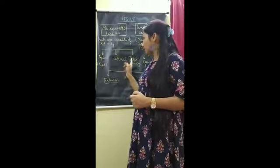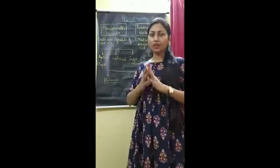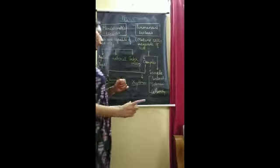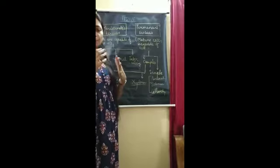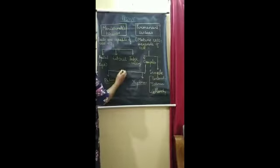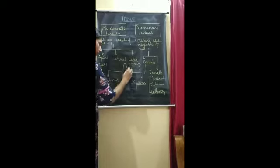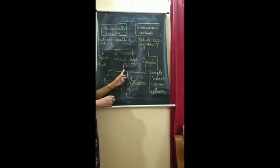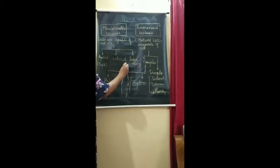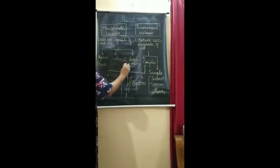We can see all these positions in a plant. I will draw a picture so you can understand the positions of apical, lateral, and intercalary meristematic tissues in a plant. At the top, you can see the tip portion, which is made up of meristematic tissues called the apical meristem.